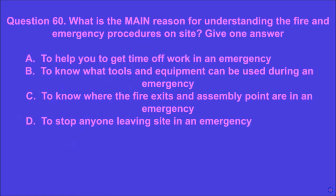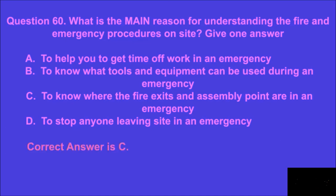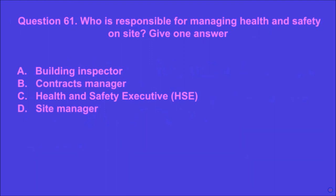Question 60: What is the main reason for understanding the fire and emergency procedures on site? Give one answer. A: to help you get time off work in an emergency, B: to know what tools and equipment can be used during an emergency, C: to know where the fire exits and assembly point are in an emergency, D: to stop anyone leaving site in an emergency. C is the correct answer.